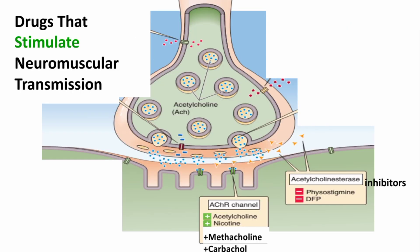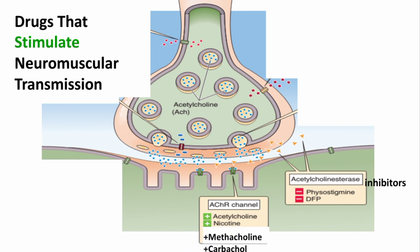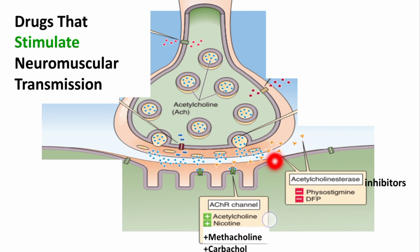To summarize the drugs which increase neuromuscular transmission: the first category includes drugs with acetylcholine-like action that bind to the acetylcholine receptor, such as nicotine, methacholine, and carbachol. The second category includes drugs which inactivate acetylcholinesterase, like neostigmine and physostigmine, and poisons like DFP or diisopropyl fluorophosphate.